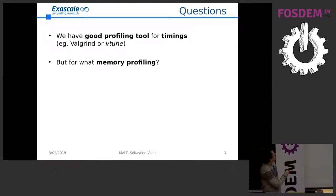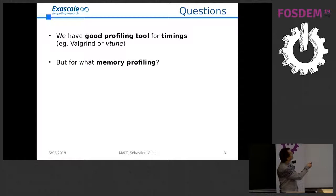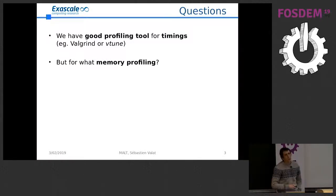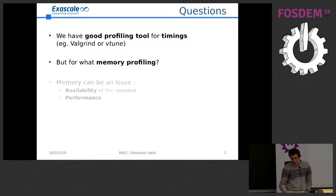During my postdoc at this laboratory, having developed a memory allocator during my PhD, I noticed we have good profiling tools for timings — Valgrind, VTune — but for memory profiling in the open-source community, we have mostly nothing. There are some commercial tools, mostly on Windows, not too much on Linux, and not much in the open-source field.